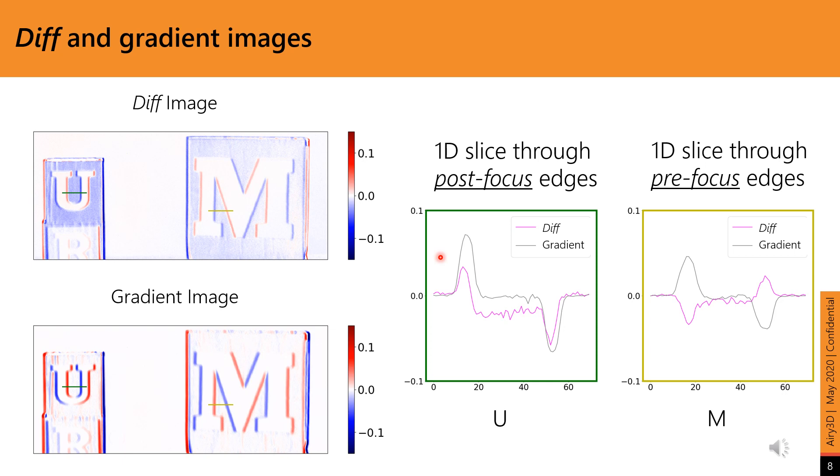For the U block, the diff and gradient images share the same sign. That is, when the gradient is positive, so is the diff and vice versa. While on the M block, they have the opposite signs. So when the gradient is positive, the diff is negative, while when the gradient is negative, the diff is positive.